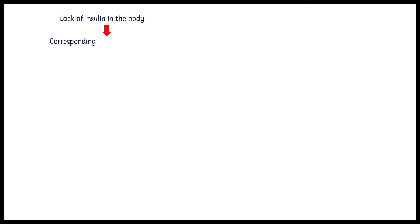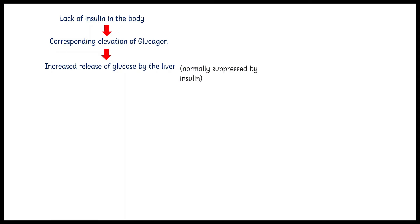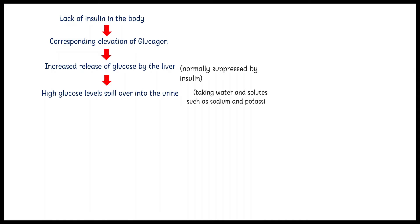Diabetic ketoacidosis arises because of a lack of insulin in the body. The lack of insulin and corresponding elevation of glucagon leads to increased release of glucose by the liver, which is a process normally suppressed by insulin. High glucose levels spill over into the urine, taking water and solutes such as sodium and potassium along with it in a process known as osmotic diuresis.